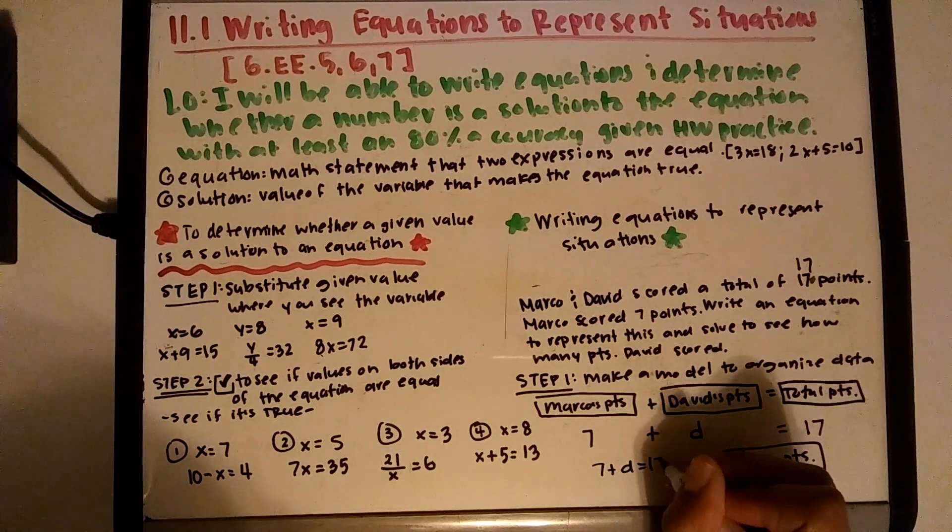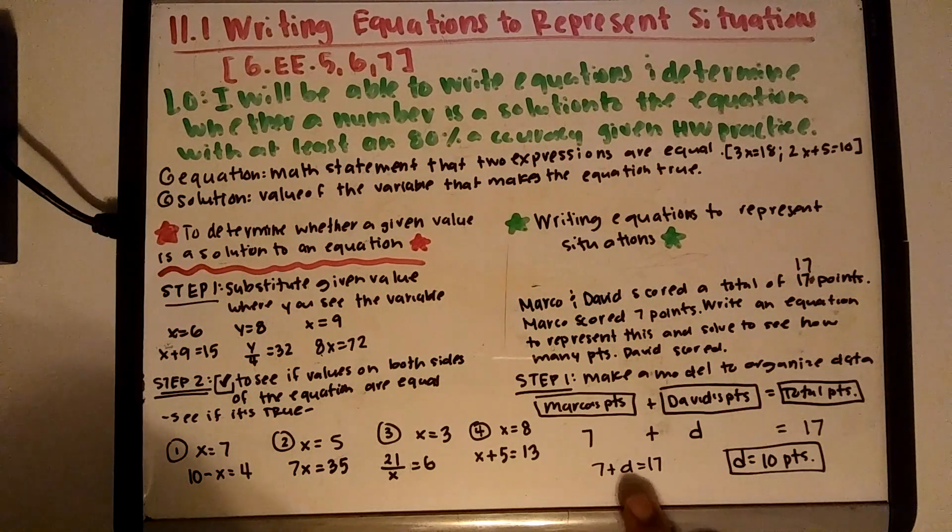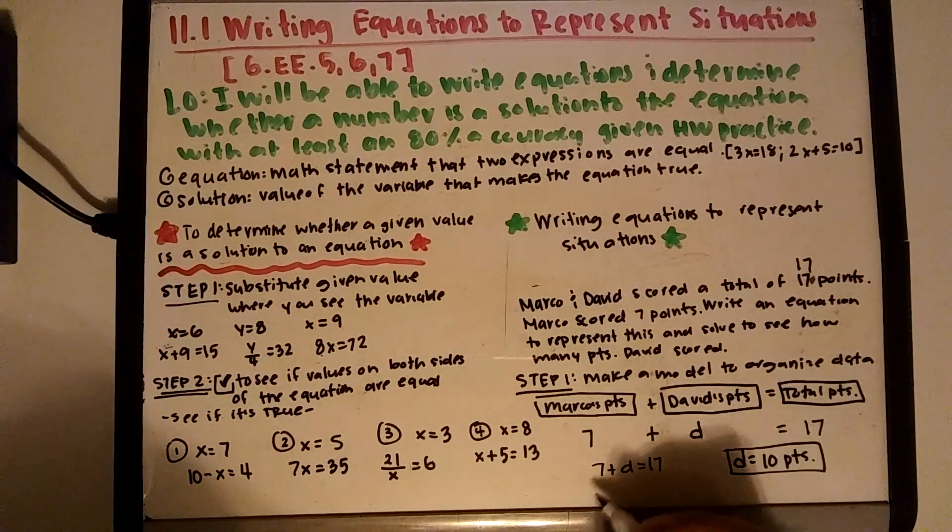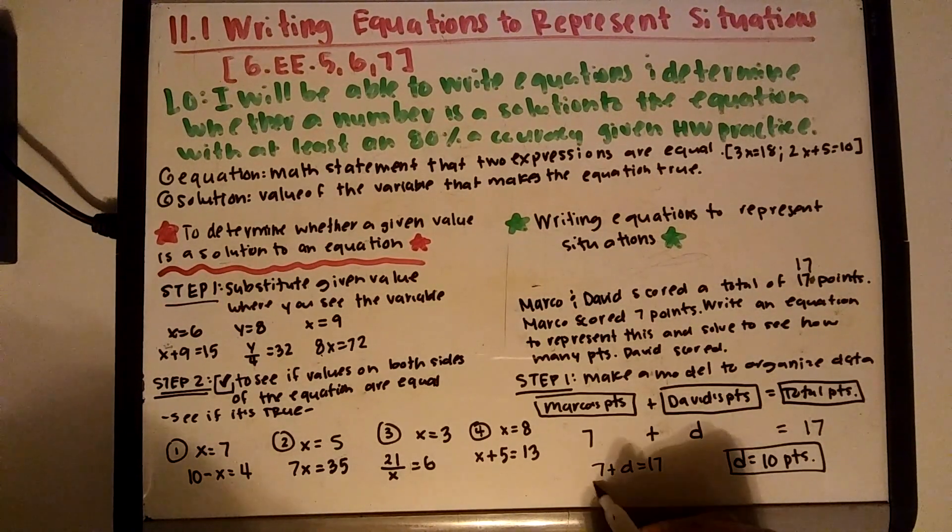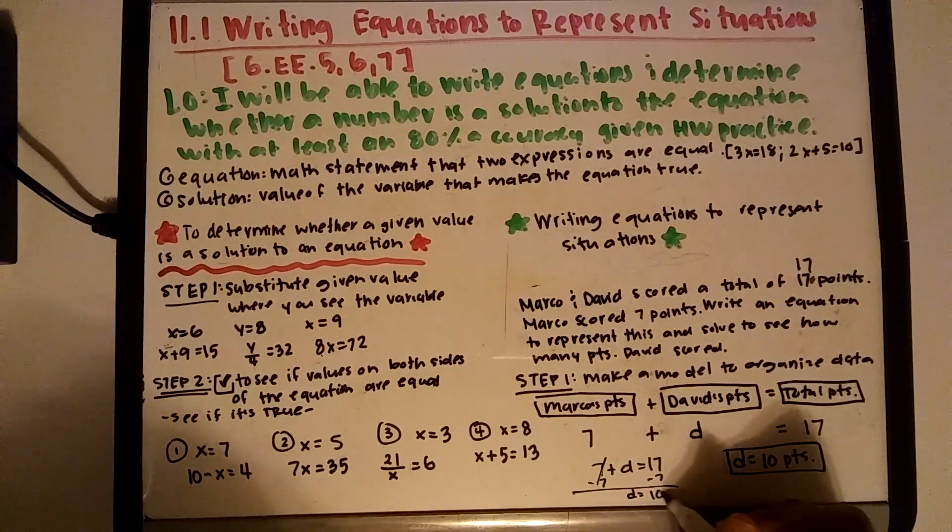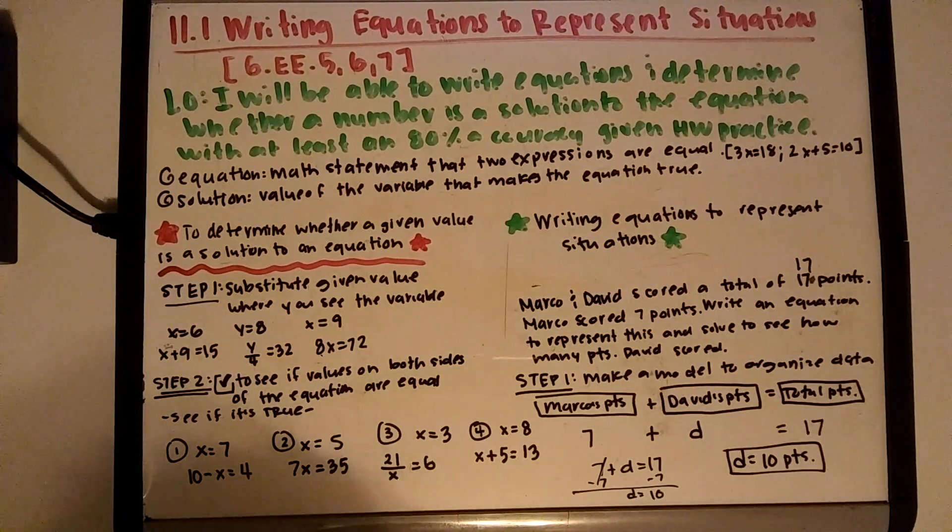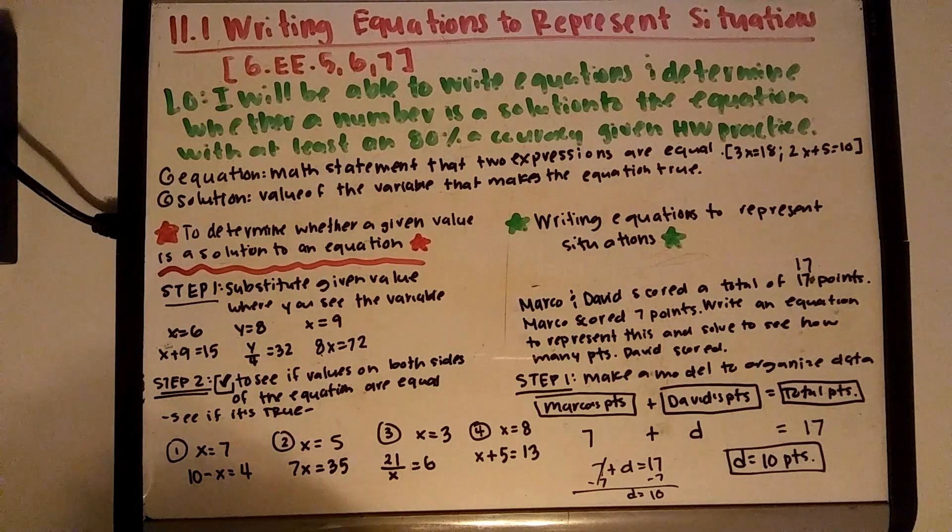The way that we do this, you guys, is basically do an inverse operation, opposites, because I want to get rid of this one to isolate my D, the variable. So to do the opposite is, how do I get rid of the 7? I subtract 7. So when I do that, I end up with D equals 10. You don't have to do it for this one, but eventually you're going to have to do that for the next lesson and for seventh and eighth grade.